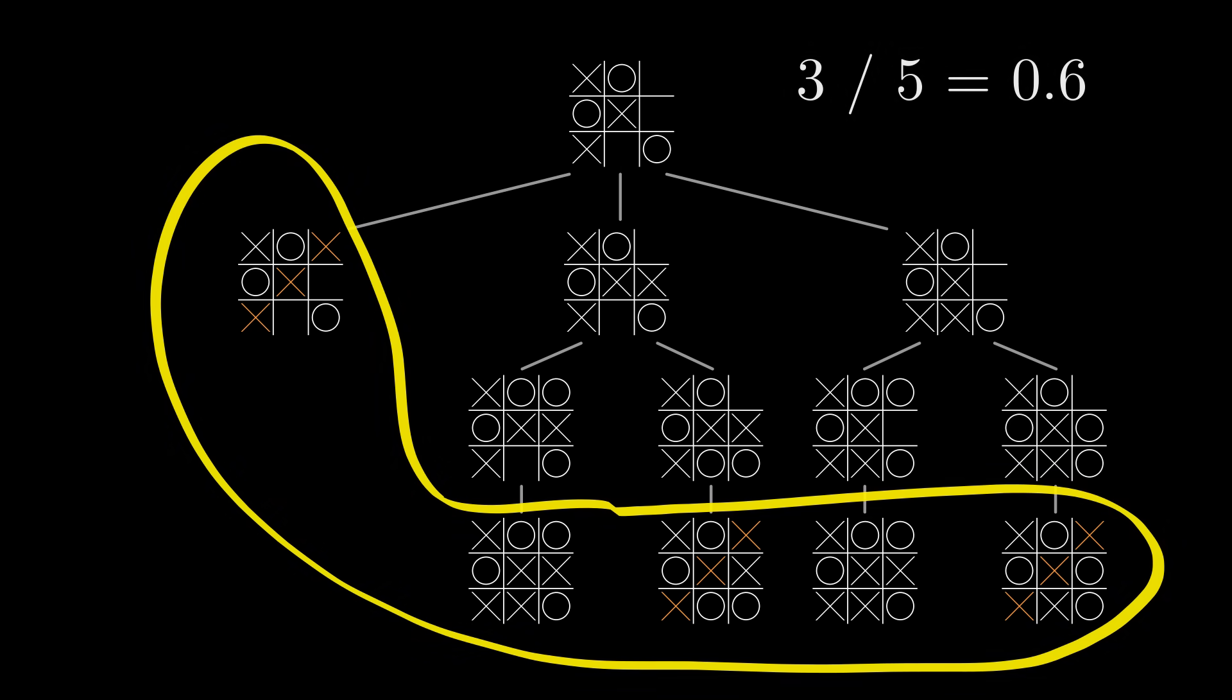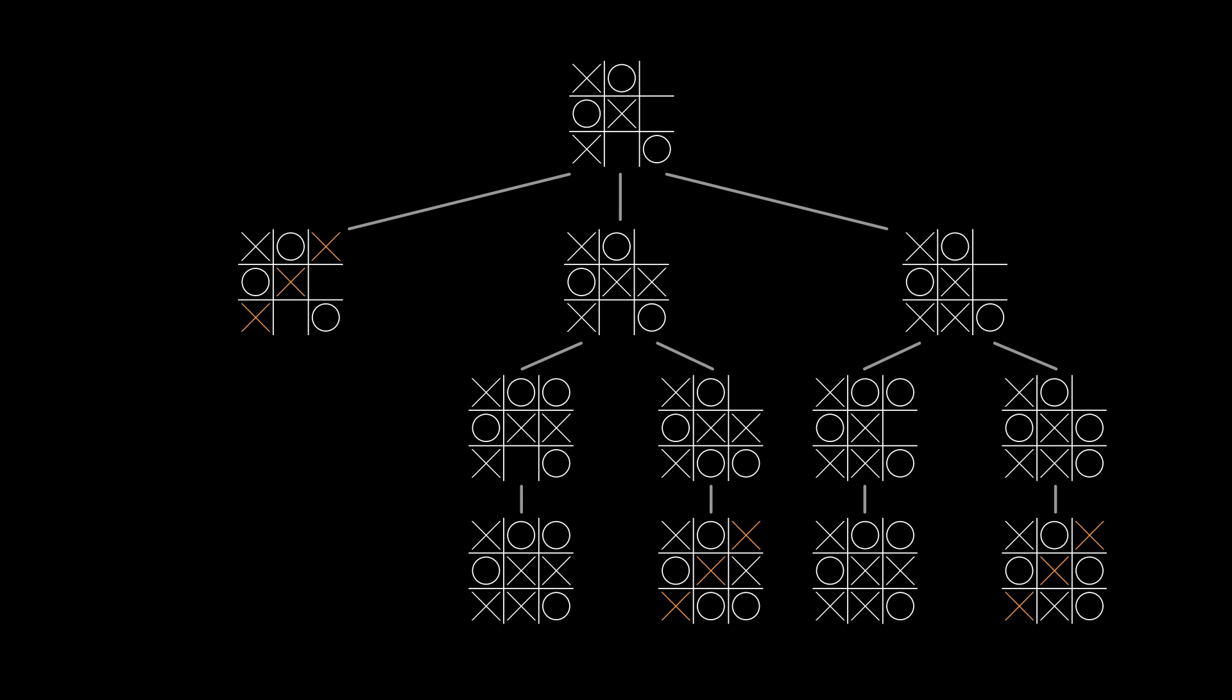But let's think again about what it means to play uniformly randomly. If every move is equally likely, then each of X's first moves has a probability of 1/3. In response, O will always have two choices, each of which has a probability of 1/2. And then the final move by X only has one choice with probability 1.